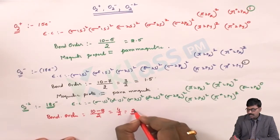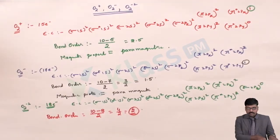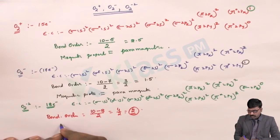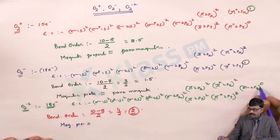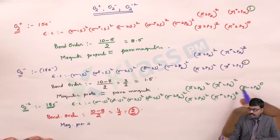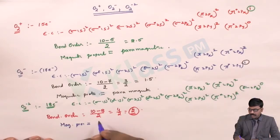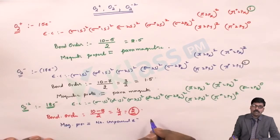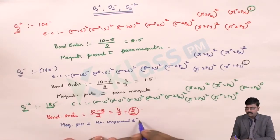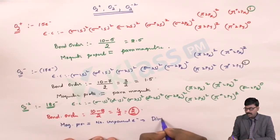The bond order of O2 minus 2 is 2. For the magnetic property: there are no unpaired electrons, so O2 minus 2 is diamagnetic in nature.